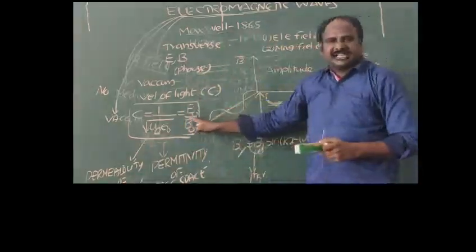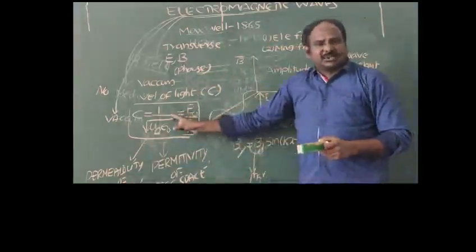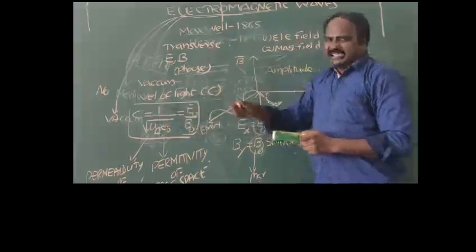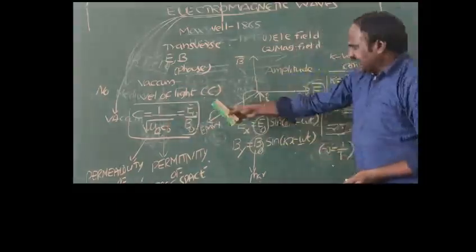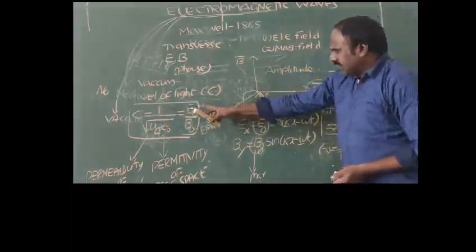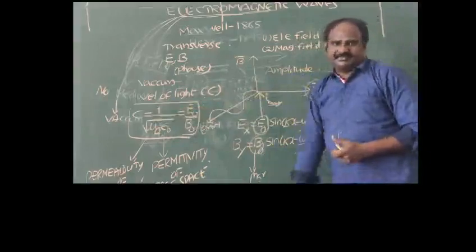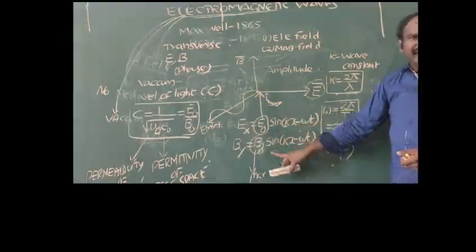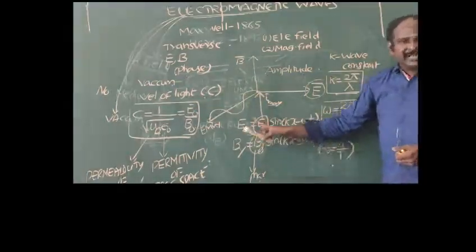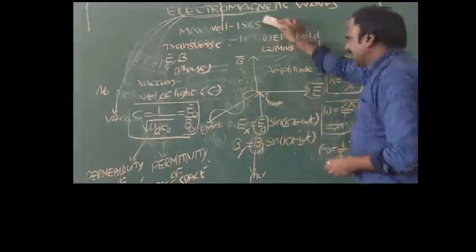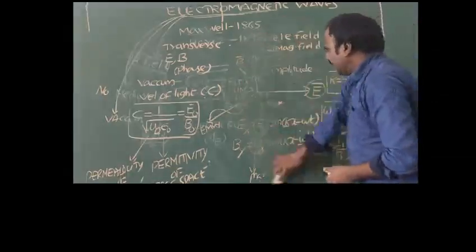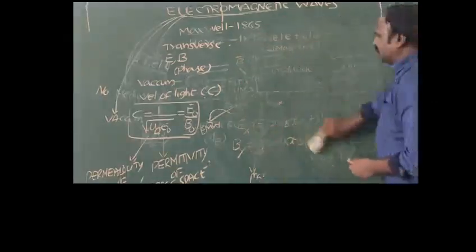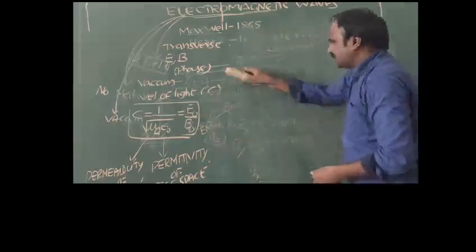When the subscript zero appears, it indicates free space. This is the standard equation used to calculate most problems in electric and magnetic fields. The equations for velocity of light and for electric and magnetic fields are widely used in current problems.